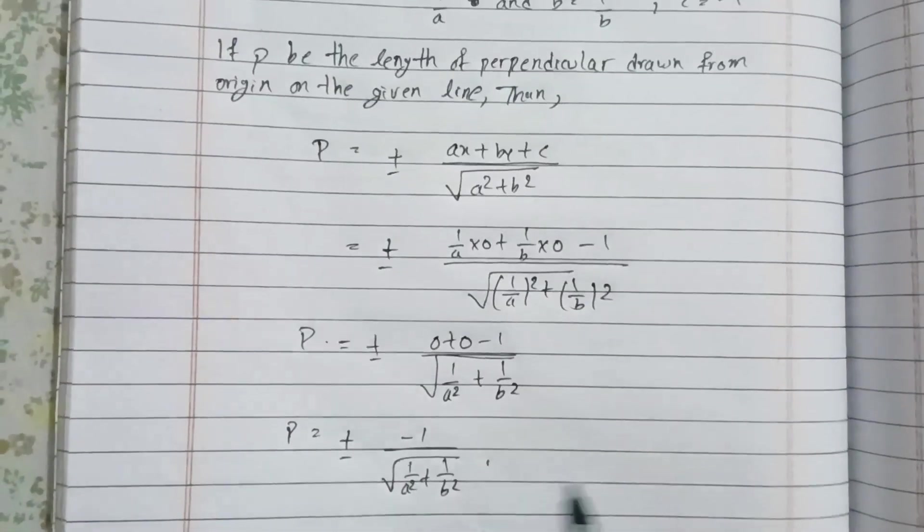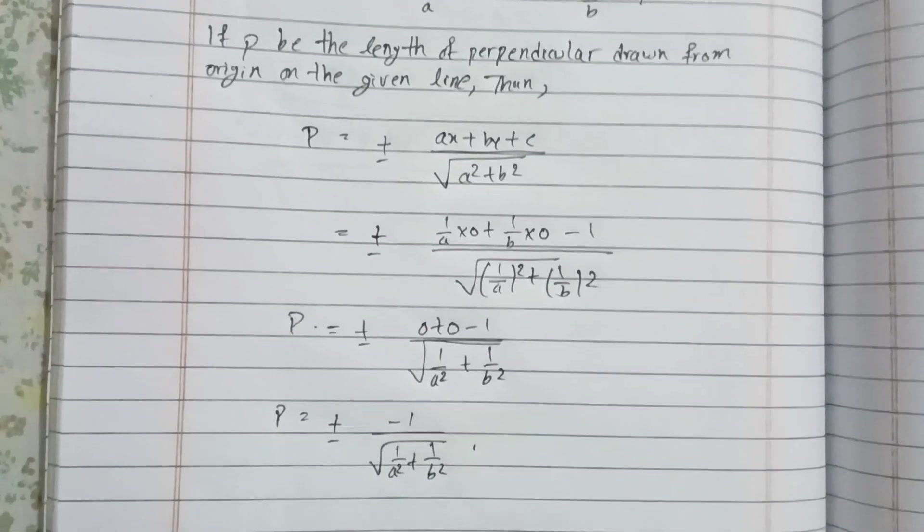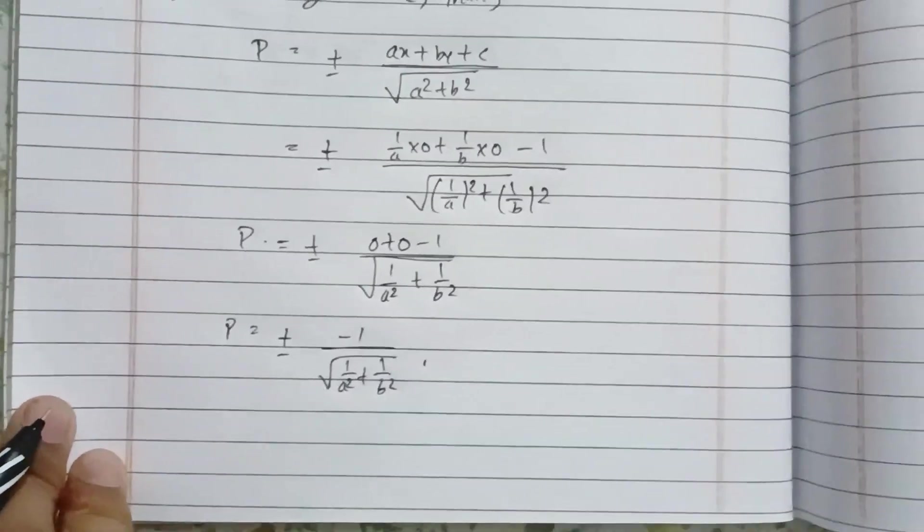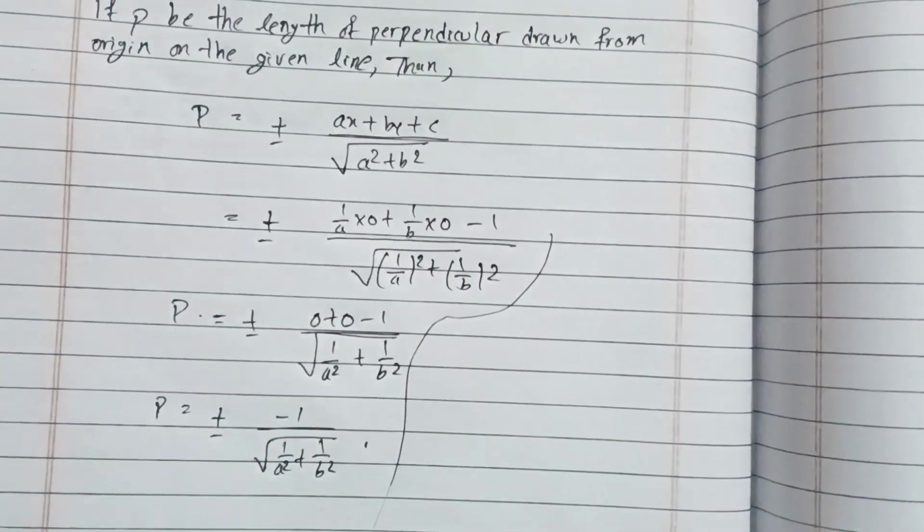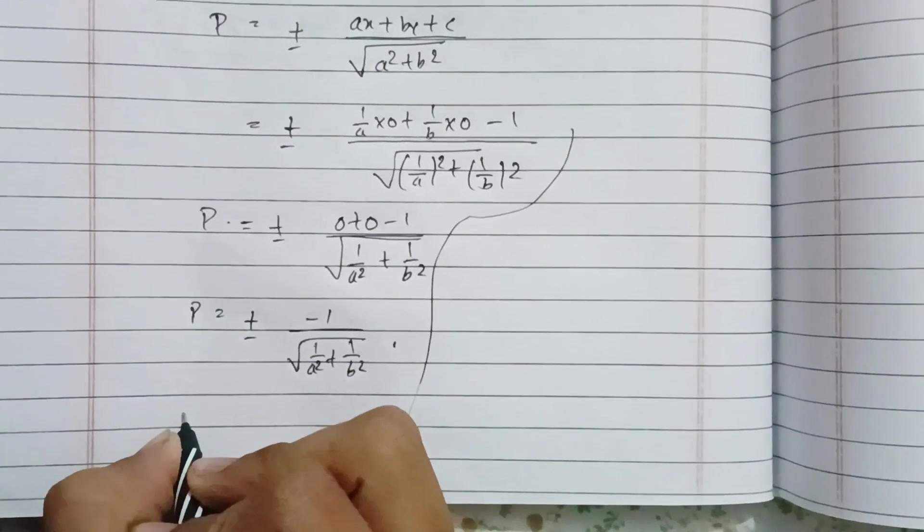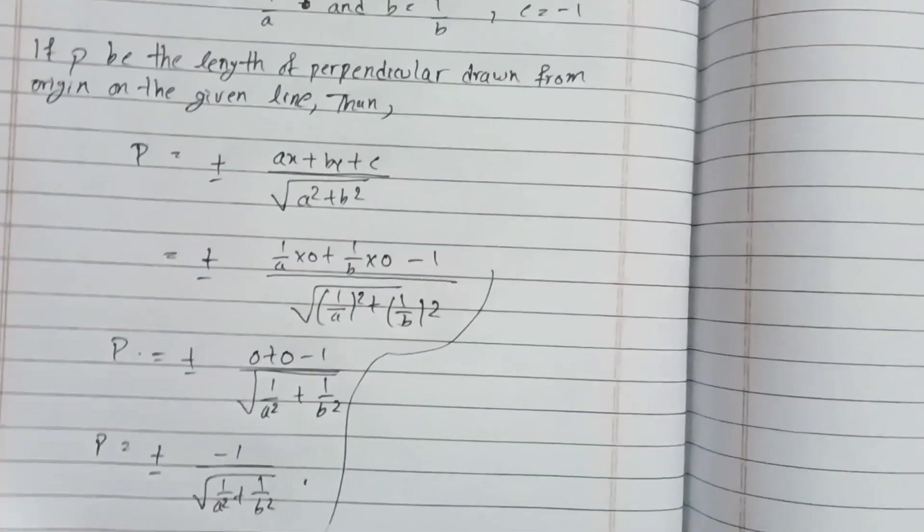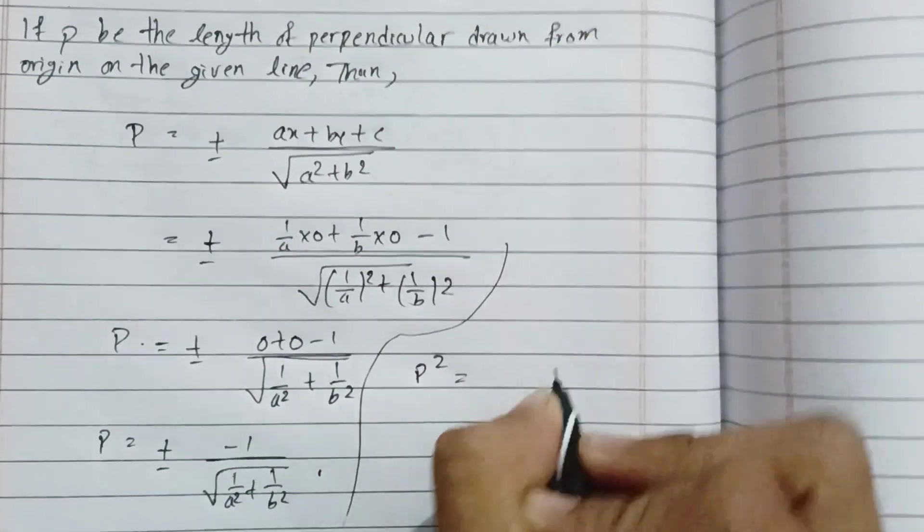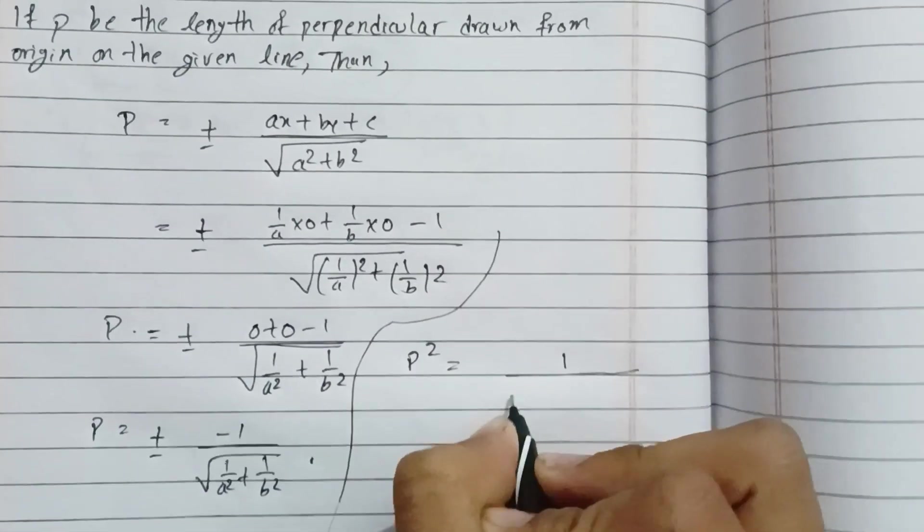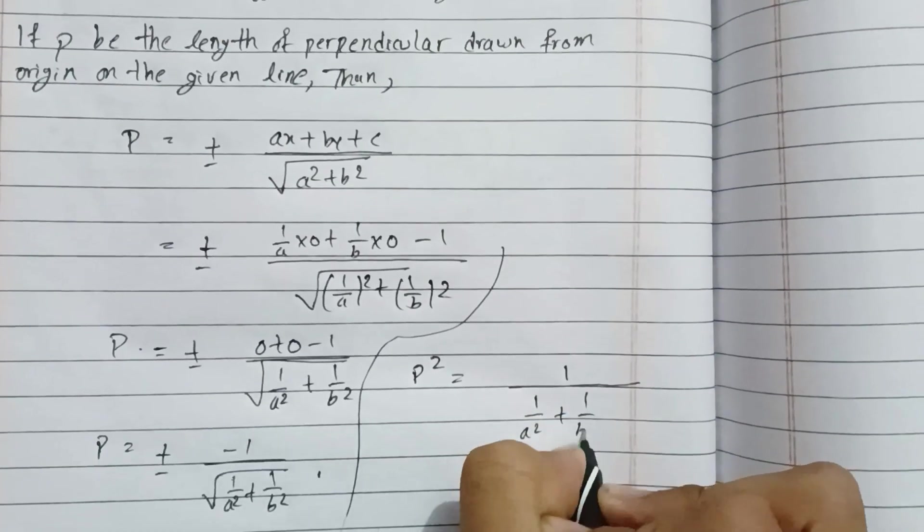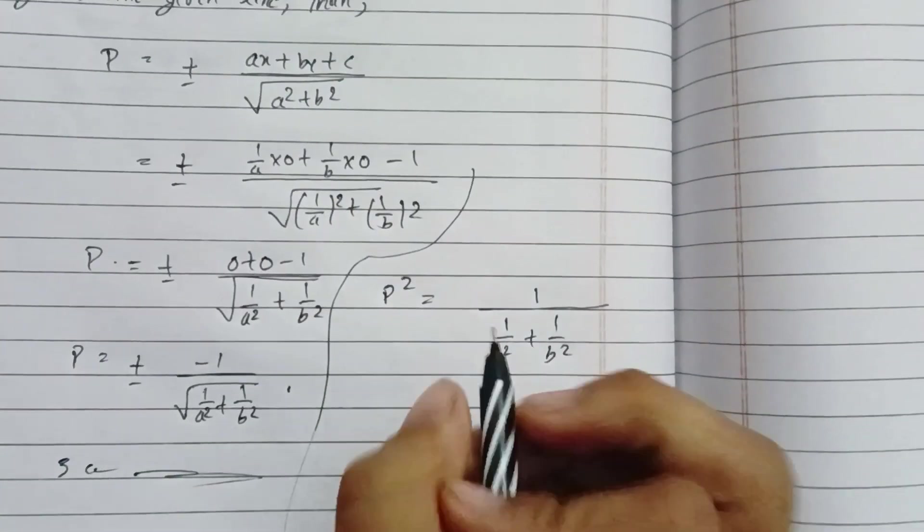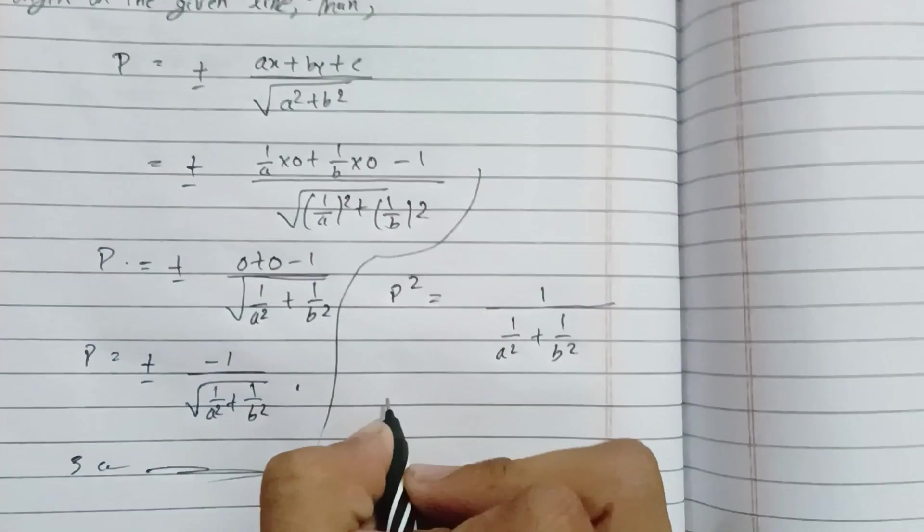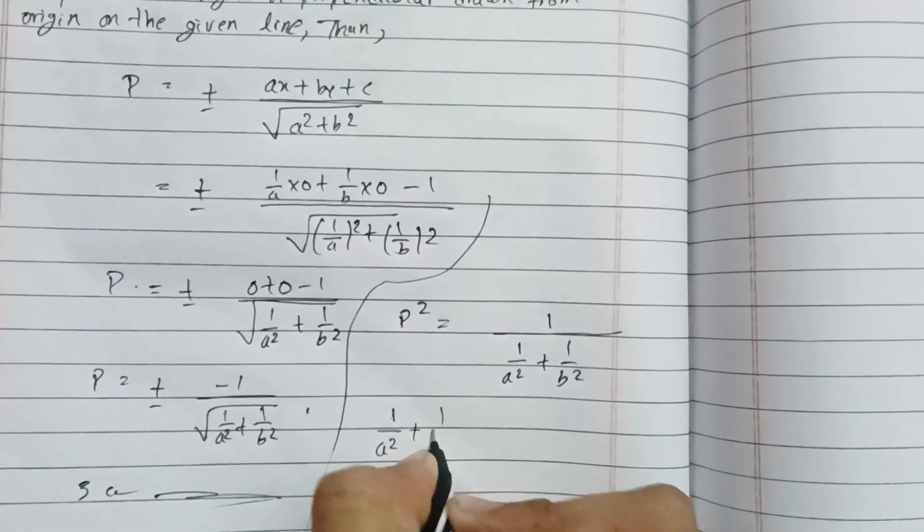Squaring both sides, we get p square equals one divided by under root one by a square plus one by b square, all squared. This gives p square equals one over one by a square plus one by b square.